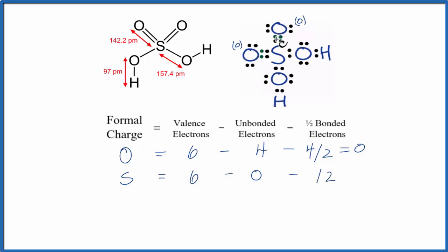And then one half of the bonded. We have two, four, six, eight, ten, twelve. And sulfur can have more than eight valence electrons, an expanded octet, so that's okay there. And we have six minus six, that's zero. So the formal charge on the sulfur, that's zero.